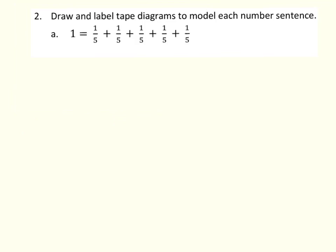Alright, our next problem is the same concept but reversed. We have the number sentence and we're going to draw and label the tape diagram. Just like before, we first need to find our whole — it's one. And what is the unit fraction they're showing? One fifth. How many are there? One, two, three, four, five — there are five one-fifths and that's why it equals one. So we're going to take one rectangle representing our whole and divide it into five sections for one fifth.